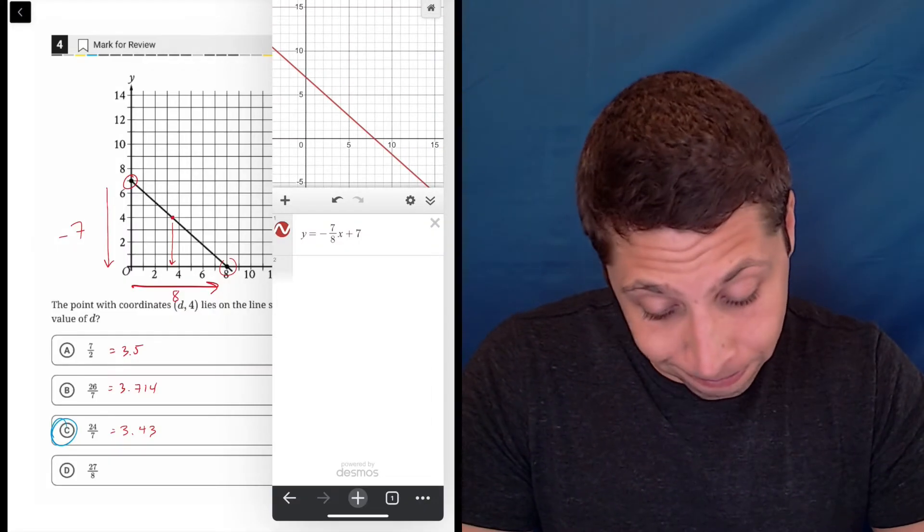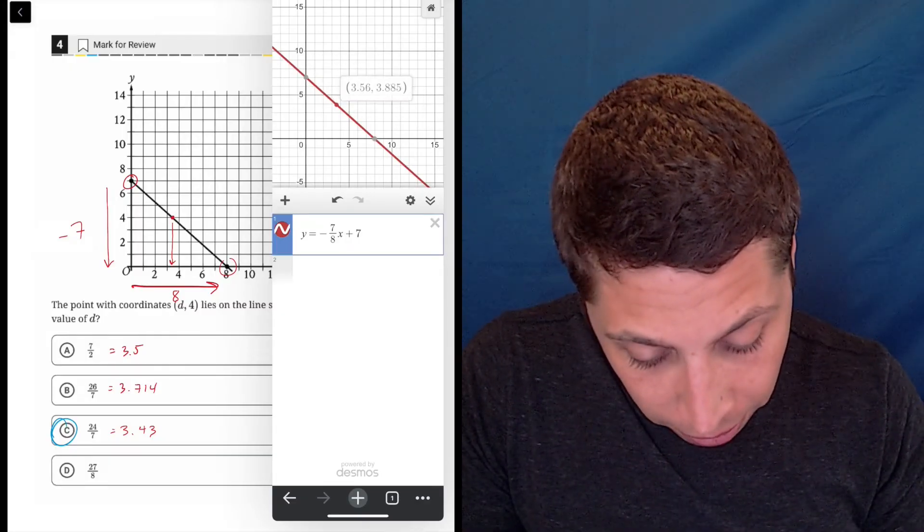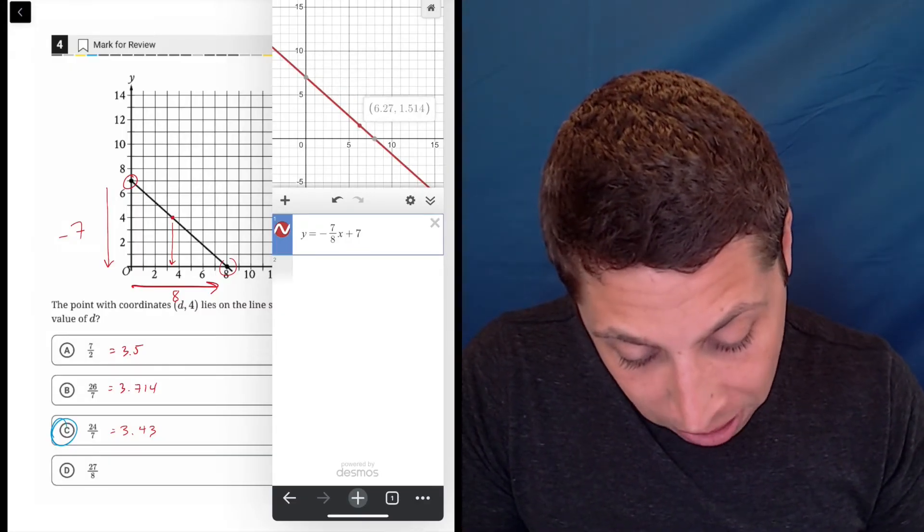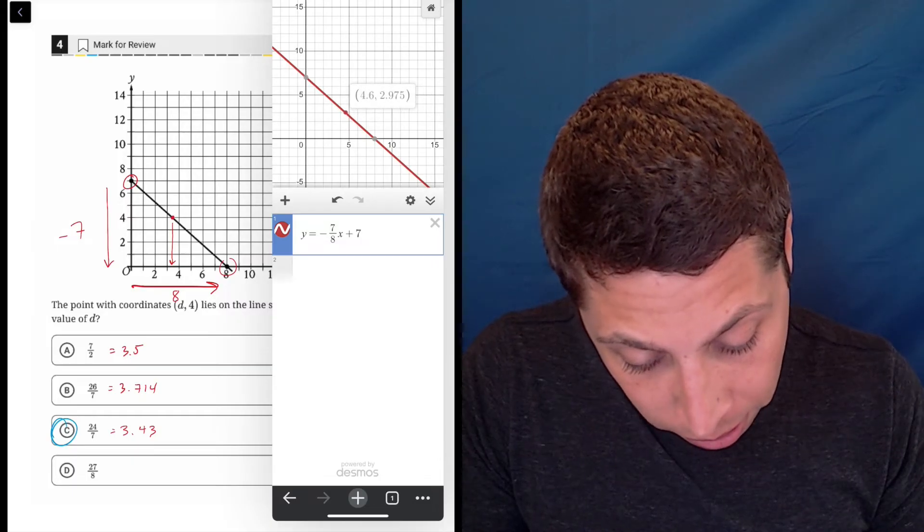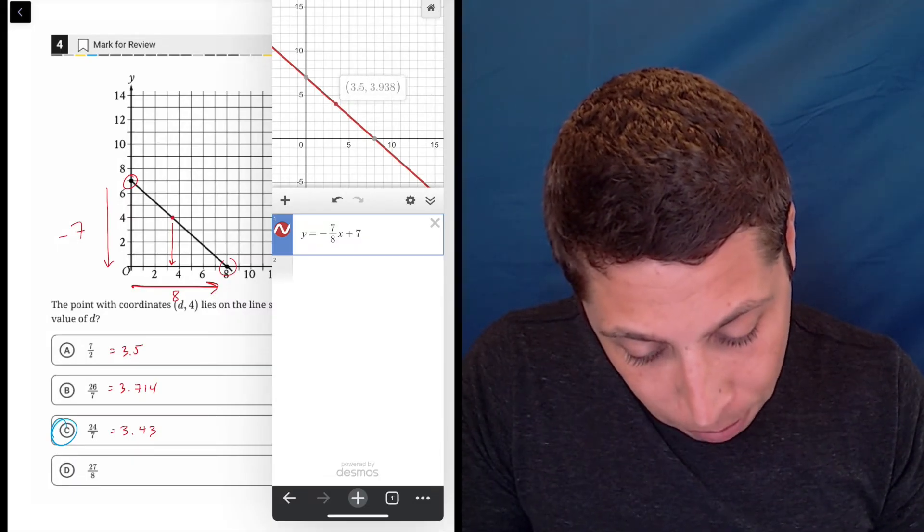And if you are clever you can kind of hold your finger, and I'm using my iPad here, to just trace the point. And I could try to find where is y equal to four, right? So the problem is you can't really get there.